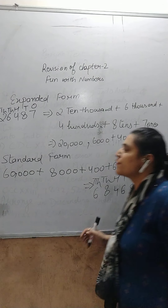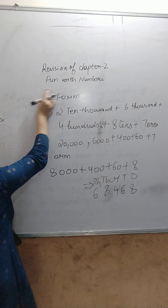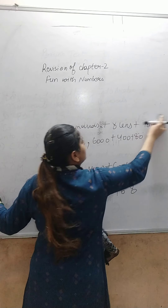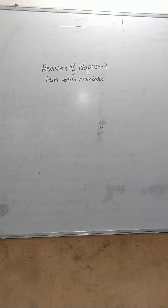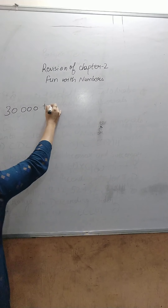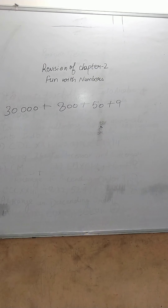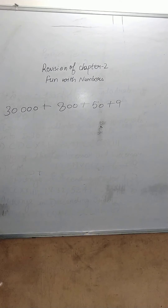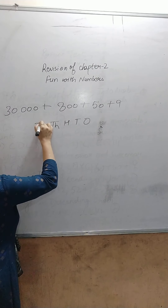Let's take one more example of standard form. The number is 30,000 + 800 + 50 + 9. We have to convert this expanded form into standard form. First of all, write the place values: 1, 10, 100, 1,000, 10,000.